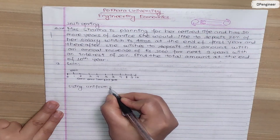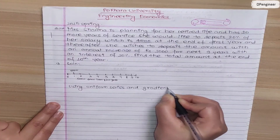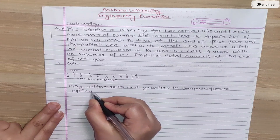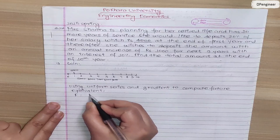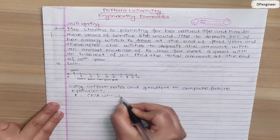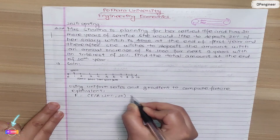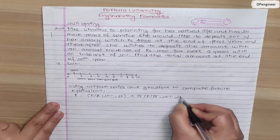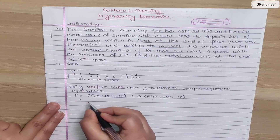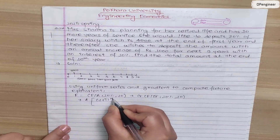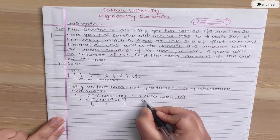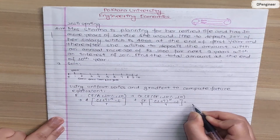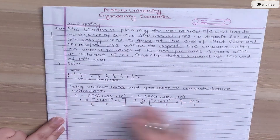We are going to solve this using uniform series and gradient to compute the future equivalent. Using the gradient series formula: F = A × [(1+i)^n − 1] / i + G/i × [(1+i)^n − 1] / i − G/i × n.